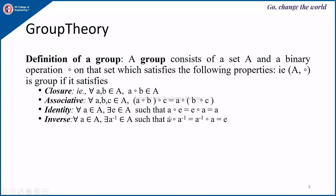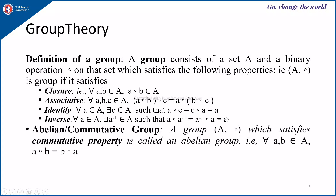That means, for every element a you can identify an inverse a-inverse such that if you perform the operation a composition a-inverse you get the identity element. These are the four properties that a group must satisfy. In addition to these four properties, if a group satisfies the commutative property — that is, for all a, b belonging to A, a composition b equals b composition a — then it is called an abelian group or a commutative group.